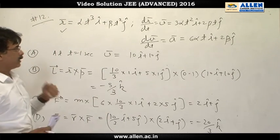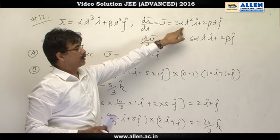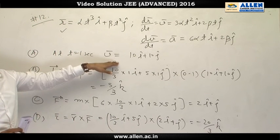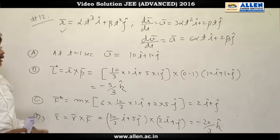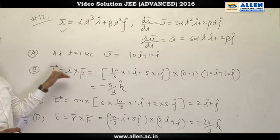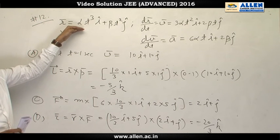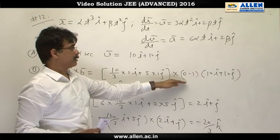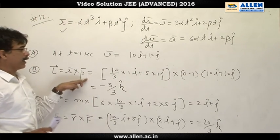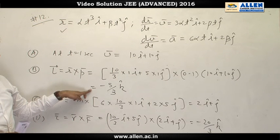At t equal to 1 second, by substituting value of alpha and t equal to 1 second in the velocity vector, we get velocity vector. Since angular momentum is defined as r cross p, we have been given r vector, mass, and velocity vector at t equal to 1 second. On taking cross product, we get angular momentum.